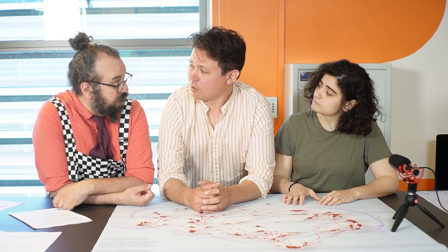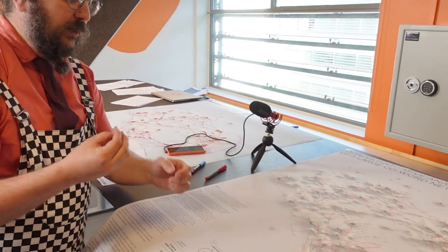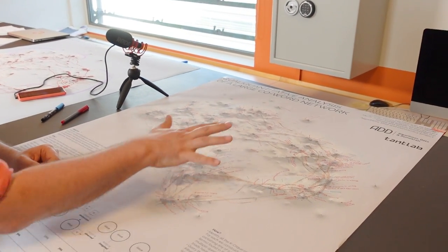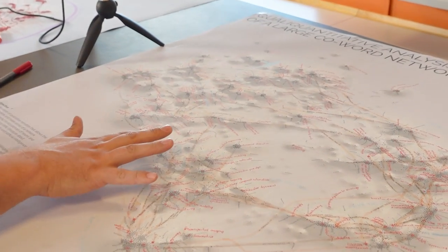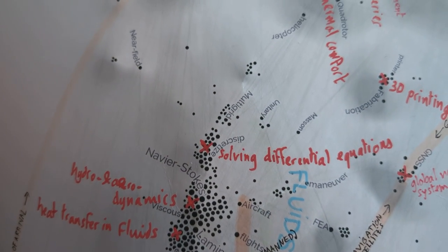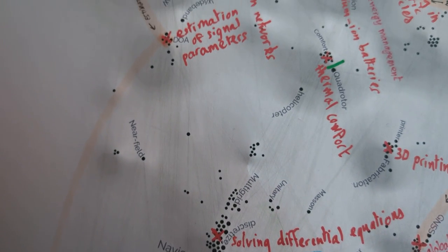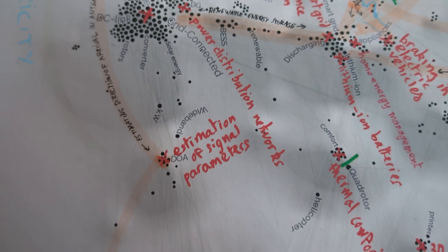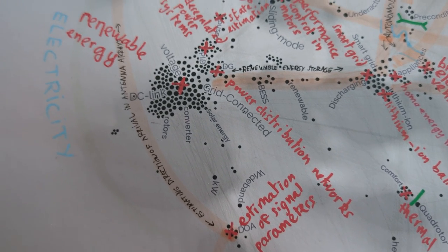We take these papers — there are one million of them — and with an algorithm we extract all the words from them. When different words appear together in many different papers, we connect them. So we have a network where the little dots are the words and the connections between them appear when those words co-occur across many papers.